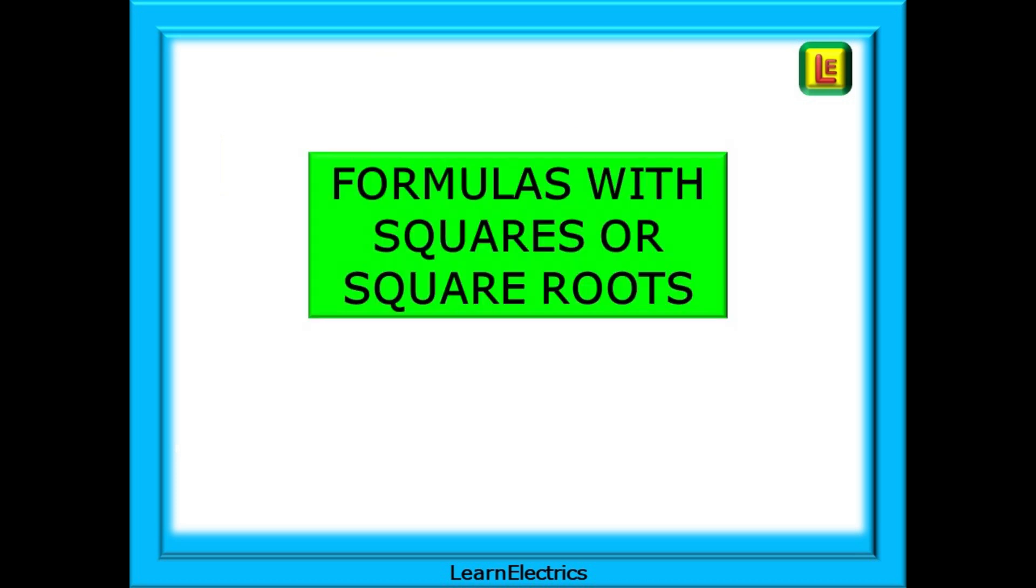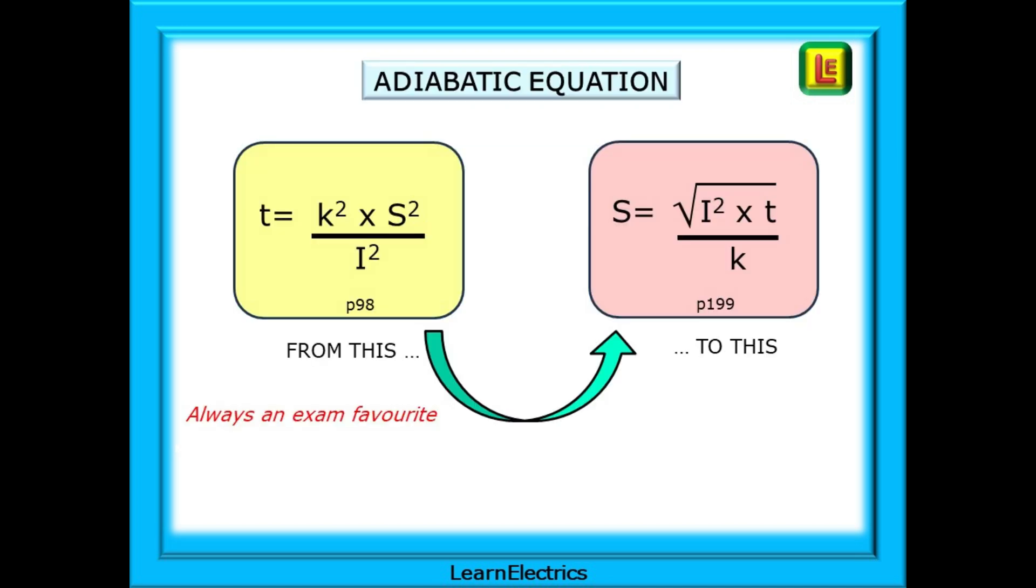Then we can have formulas with squares or square roots. Sounds complicated but follow the rules and it really is easy. Consider the adiabatic equation, another exam favourite. You must know how to use and manipulate this formula. The formulas are shown on pages 98 and 199 of the Brown Amendment 2 wiring regs book. Can you rearrange this? Can you get from T equals something to S equals something without using the book?